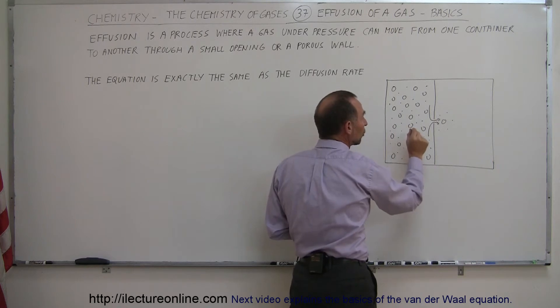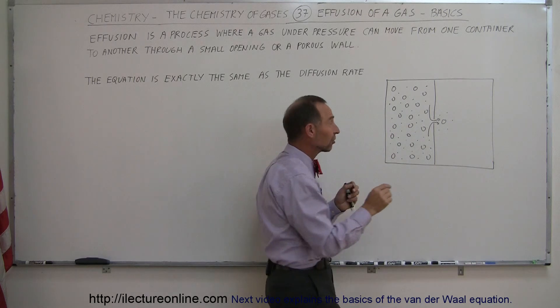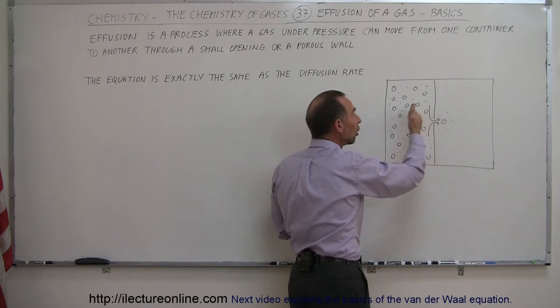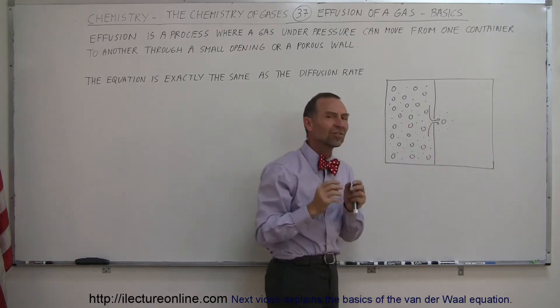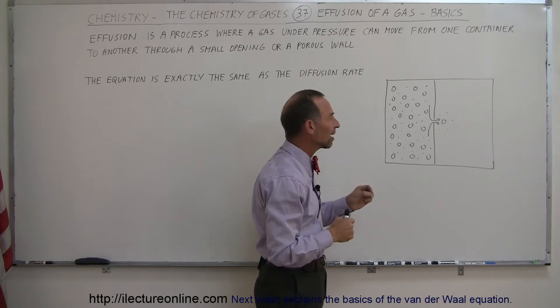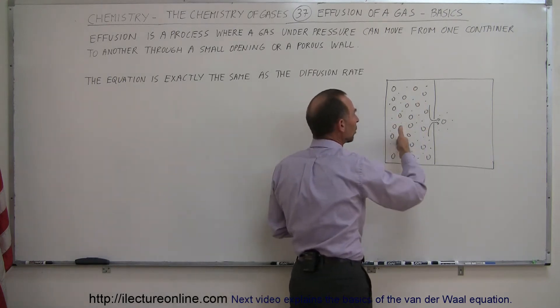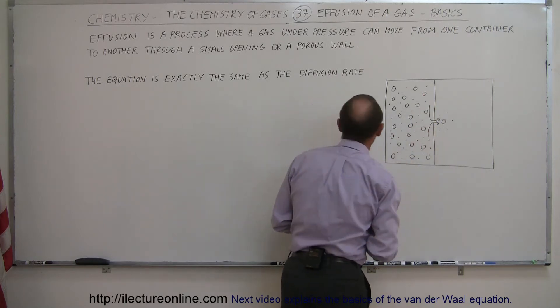But it turns out that the smaller molecules, which of course therefore move faster, make it through a little hole in greater quantity than the larger molecules. Not because of size so much, but more because of the velocity at which they travel. So if you want to separate out molecules that are smaller, you can do it through the process of what we call effusion.